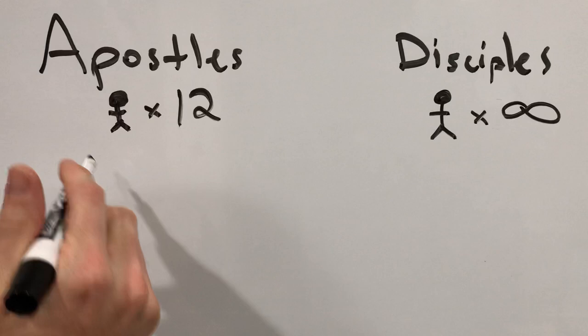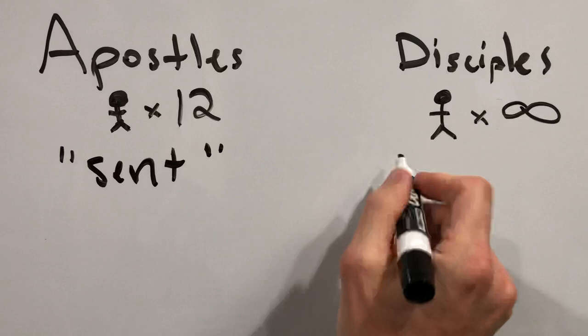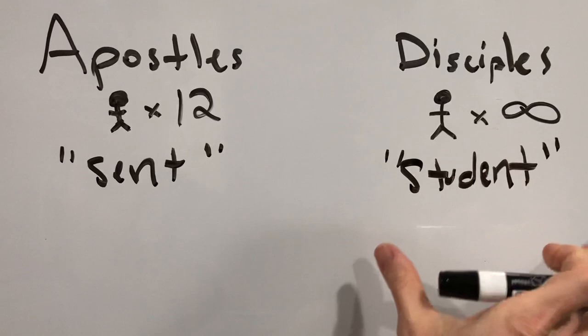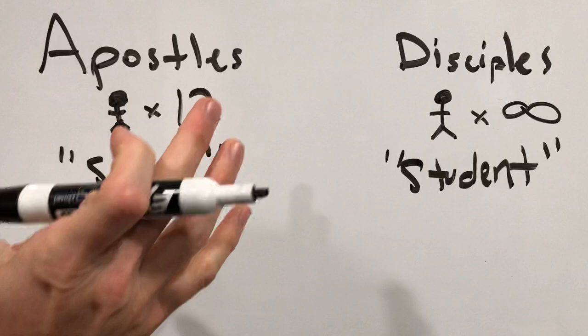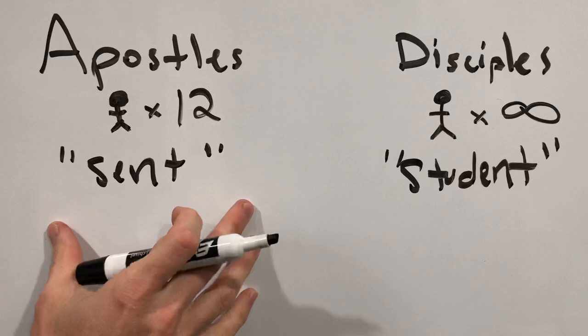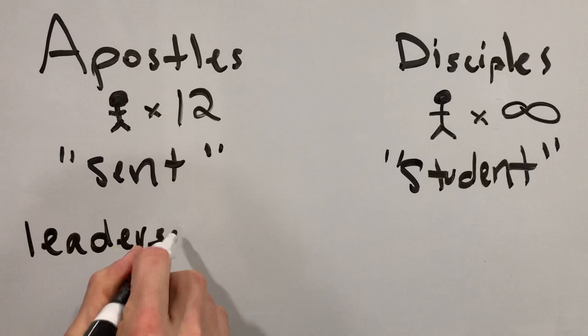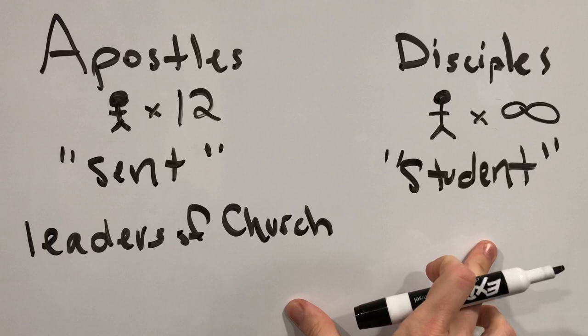These terms — what do they mean? Apostle means one who is sent, and disciple is a student. So the many disciples in the Gospels are the followers of Jesus. But it says in the Gospels that Jesus appointed specifically 12 men to be his apostles, and these apostles have a specific role: they are the leaders of the church, leading the rest of the disciples.